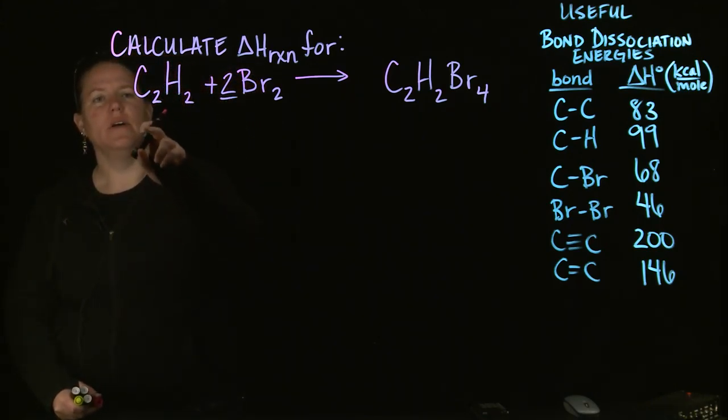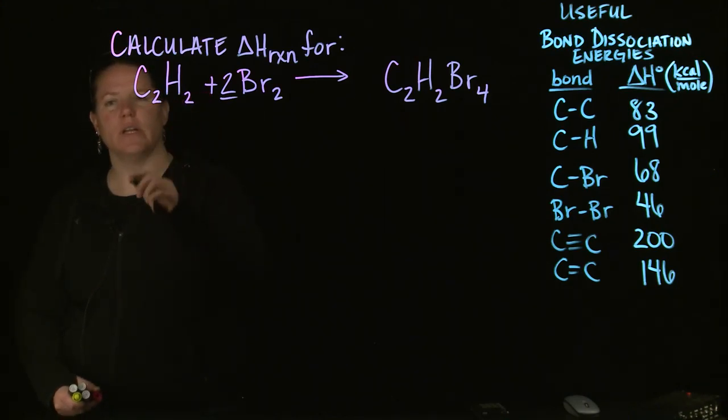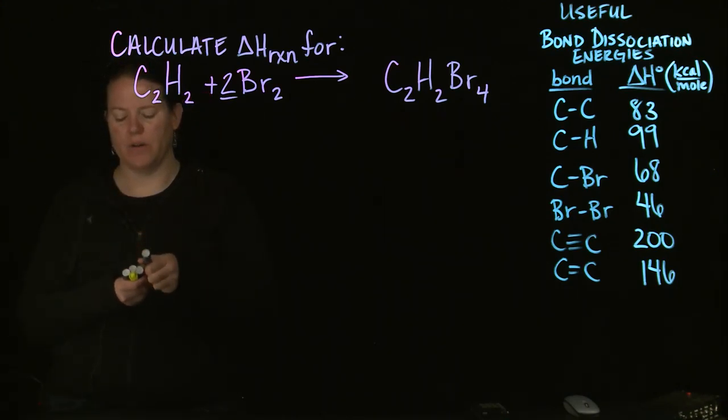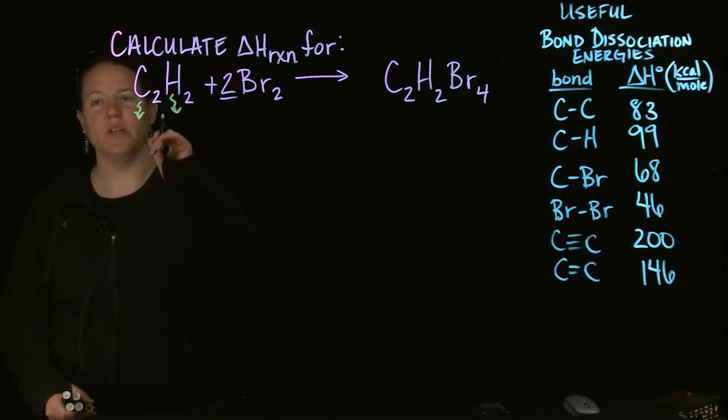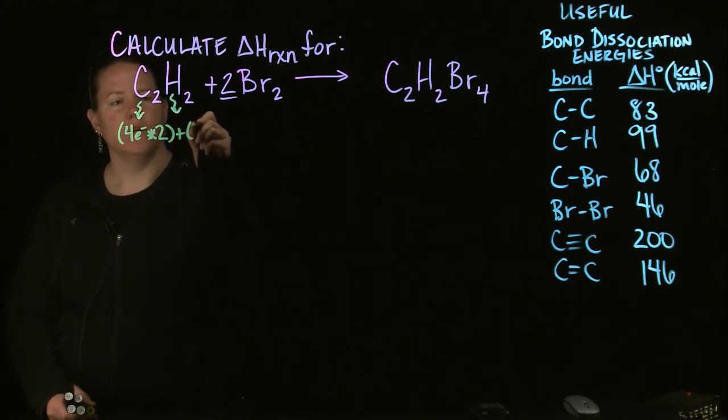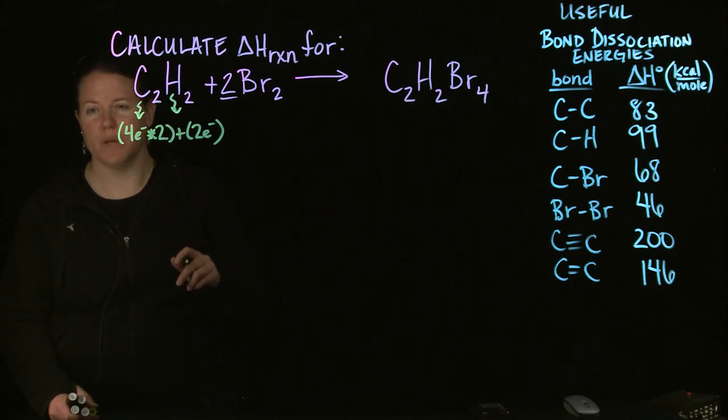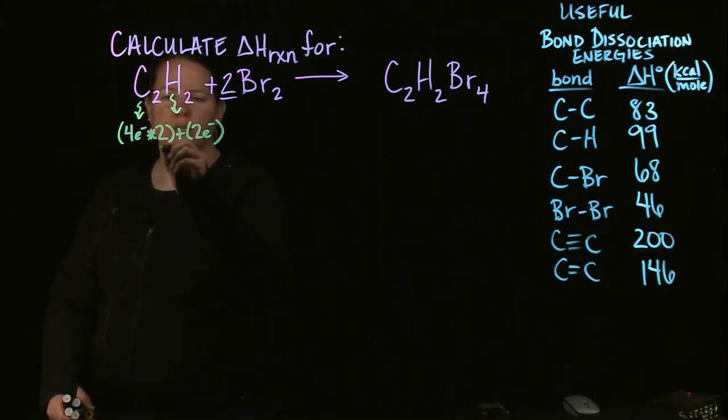Alright, so you have two C's here. So if you're looking at the Lewis dot structures, maybe you would go about doing it the way we do most Lewis dot structures where you calculate the total number of valence electrons you have from each of the atoms. I have four electrons from each C and there are two C's. Two electrons total from the H's because there's one electron from each H and two H's. That gives me a grand total of 10 electrons.